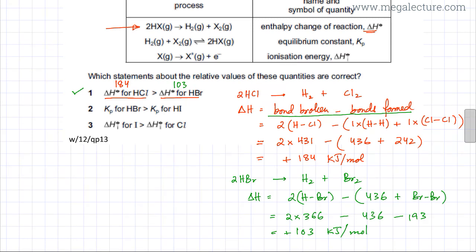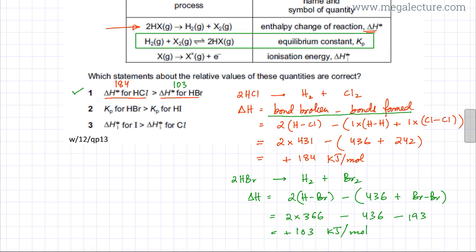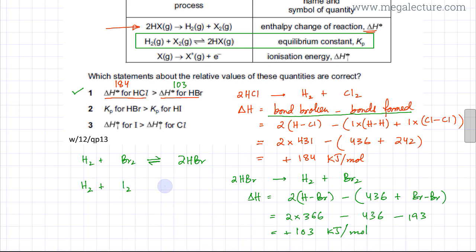Now let's focus on the second statement, which says that Kp for HBr is greater than Kp for HI. This refers to the equilibrium reaction H2 + halogen ⇌ 2 hydrogen halide. For HBr: H2 + Br2 ⇌ 2HBr. For HI: H2 + I2 ⇌ 2HI. All species are in the gaseous state.